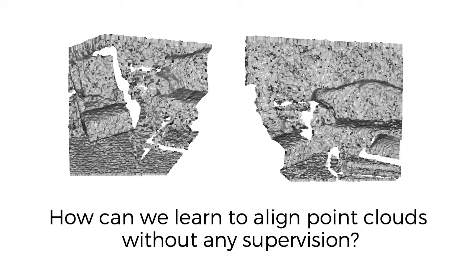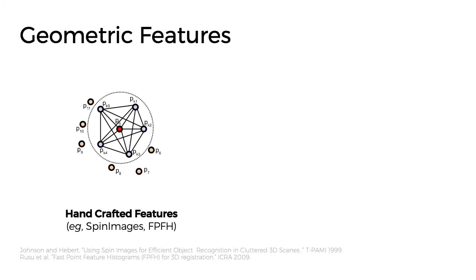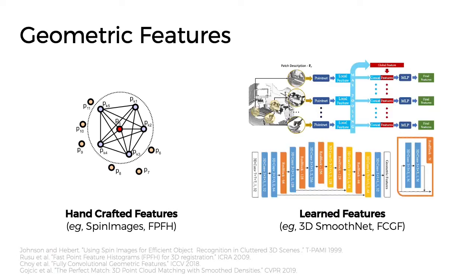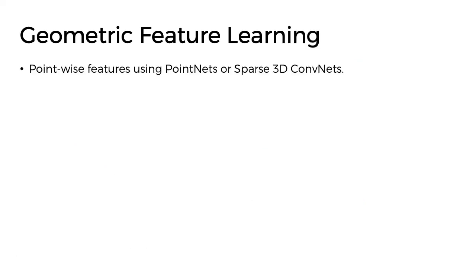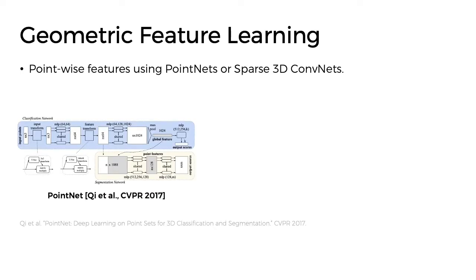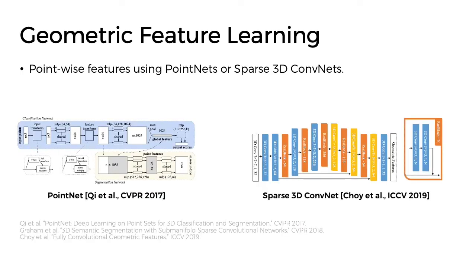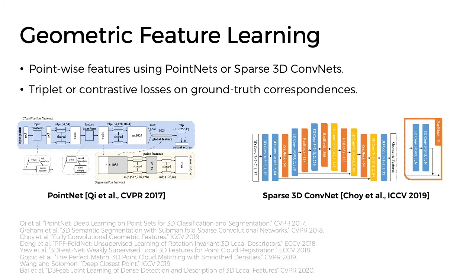One solution is to have good feature descriptors for each point. This resulted in a lot of work on geometric feature extraction. While early work relied on handcrafted features, where a descriptor was computed for each point based on its local 3D neighborhood, more recent work leverages supervised learning to train neural networks that learn those features directly from the data. Geometric feature learning has been enabled by architectures that operate directly on point clouds or on sparse voxelizations of point clouds, and these architectures have shown success in classification and segmentation. To learn local descriptors for correspondence, prior work typically uses triplet or contrastive losses on ground truth correspondences.